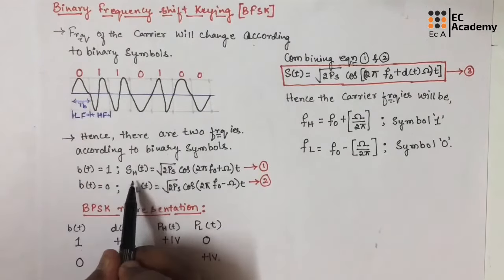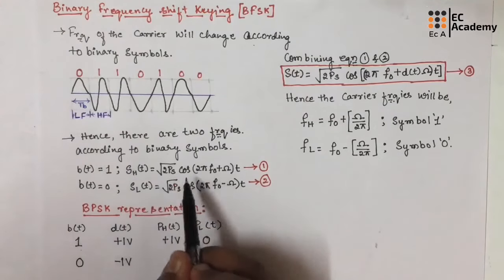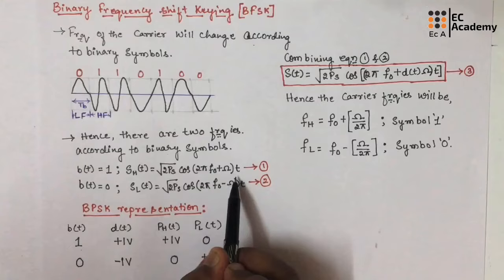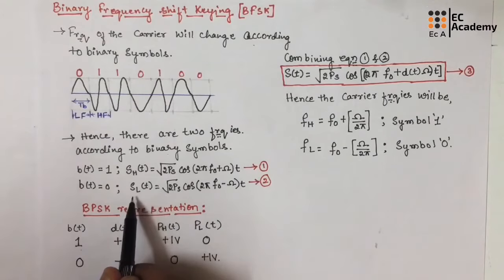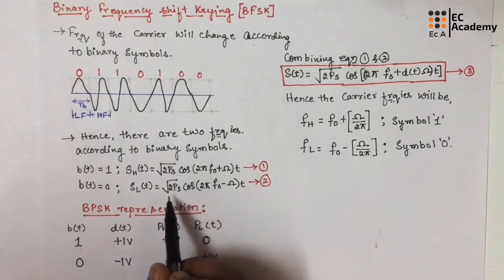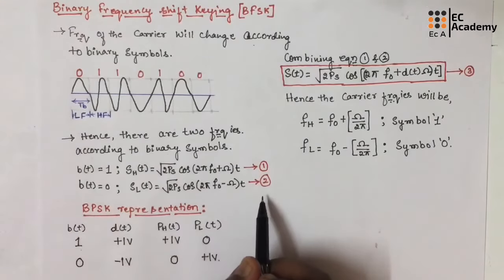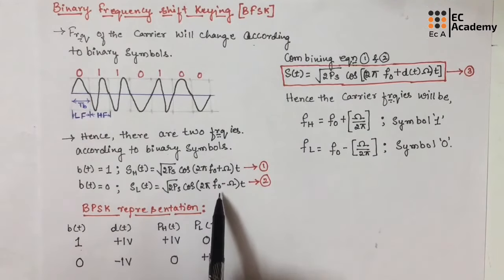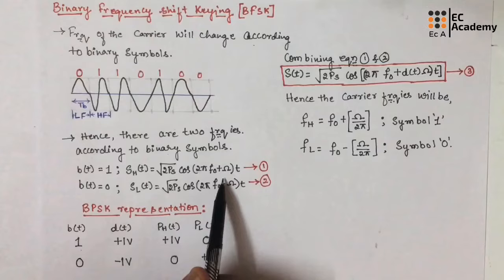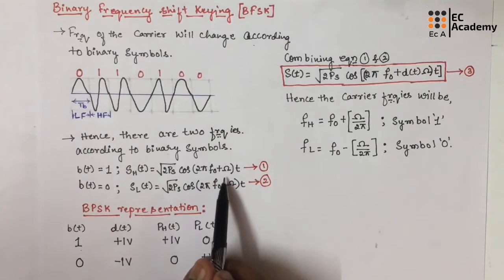If the bit is 1, then the signal will have the high frequency, represented as sh(t) = √(2Ps) · cos(2π·f0 + ω)·t. Let us take this as equation number 1. When the bit is 0, the signal will have low frequency, represented as sl(t) = √(2Ps) · cos(2π·f0 − ω)·t. Let us take this as equation number 2. From these two equations, we can identify that the frequency will increase or decrease depending upon ω, where ω represents the frequency shift — similar to how θ represented phase change in PSK.